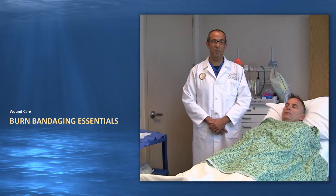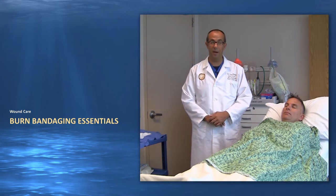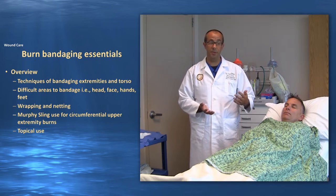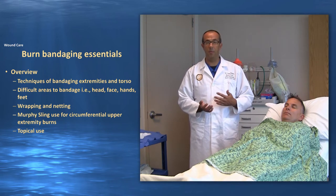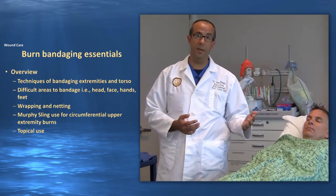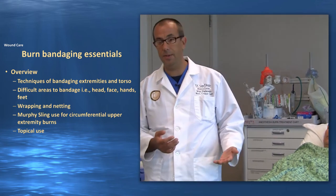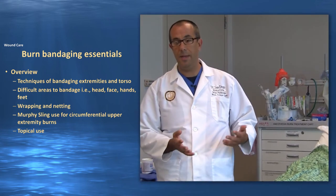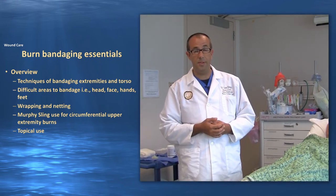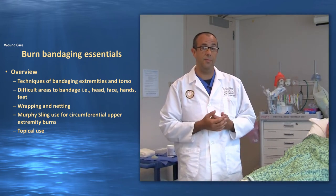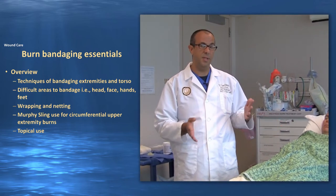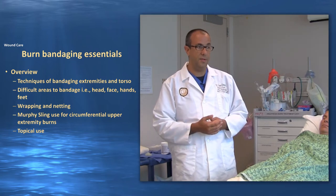We're going to discuss the basics of wound care as a brief overview, covering techniques for bandaging extremities and the torso. We'll look at more difficult areas to bandage like the head, face, upper extremities including hands, and lower extremities including feet. We'll also cover wrapping and netting of burn bandages, elevating upper extremities, murphy slings for circumferential upper extremity burns, and the use of topicals in different body areas.